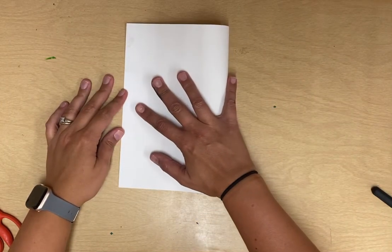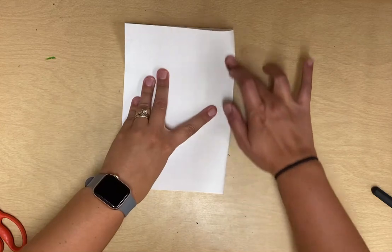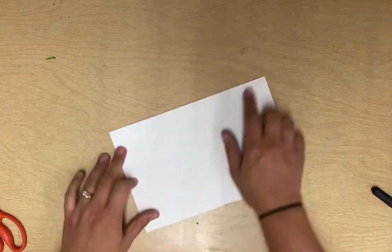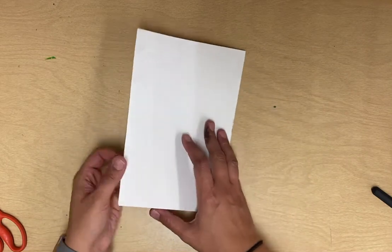To get started you're going to take your paper and fold it in half. It really doesn't matter which way you fold it, but it needs to be in half and you need to even up the edges. I like to fold it this way because it gives me more room for my butterfly.